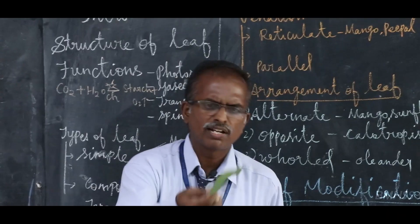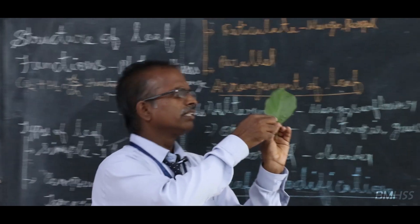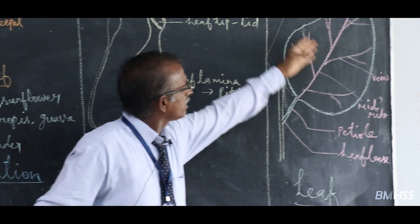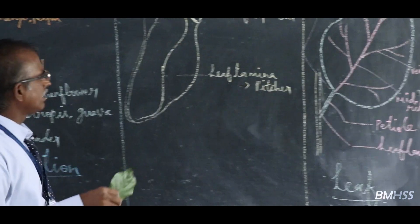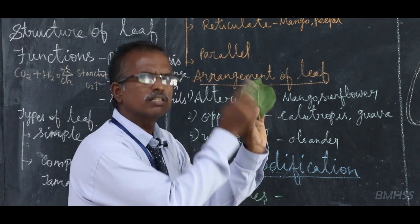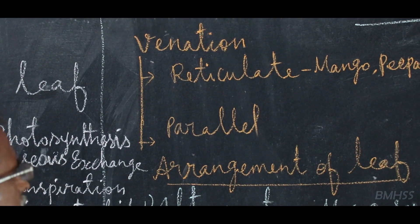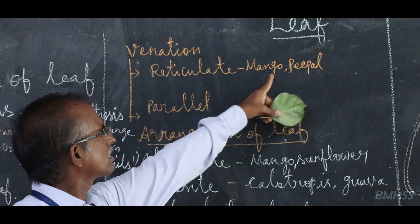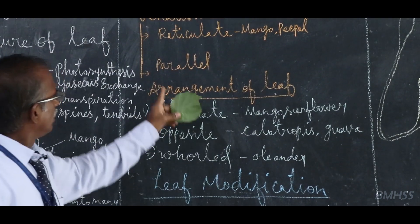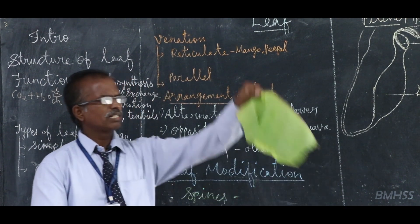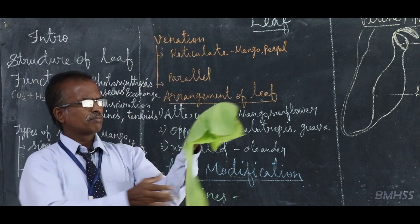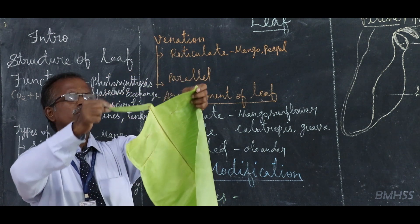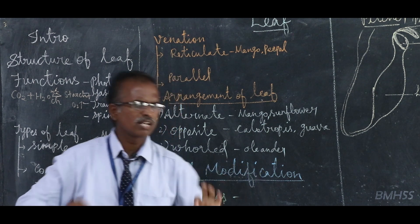Next, if you take the ventral side of the leaf, in the middle there is an important structure called the midrib. From the midrib, many veins and veinlets are branching out. The arrangement of veins on the midrib is known as venation. There are two types: if the veins are much branched and complicated, it is called reticulate venation — seen in mango, peepal, hibiscus. If all the veins run parallel to each other, as in the banana leaf, it is parallel venation.